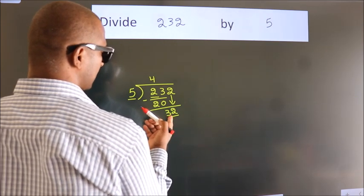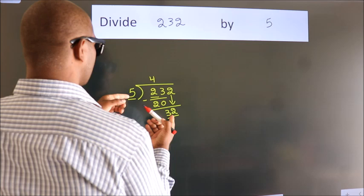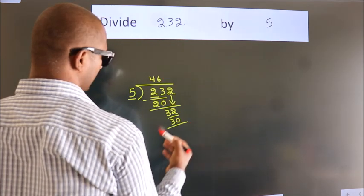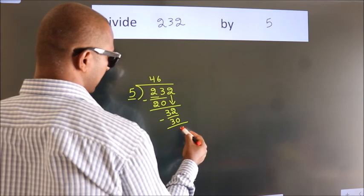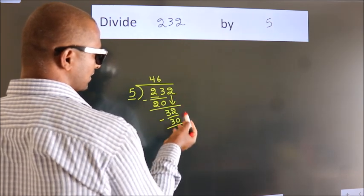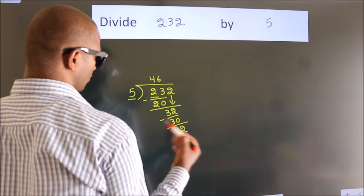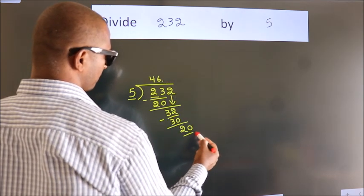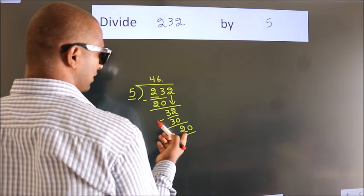A number close to 32 in the 5 table is 5 sixes, 30. Now we subtract, we get 2. After this, no more numbers to bring down, so what we do is we put a dot, take 0, so 20.